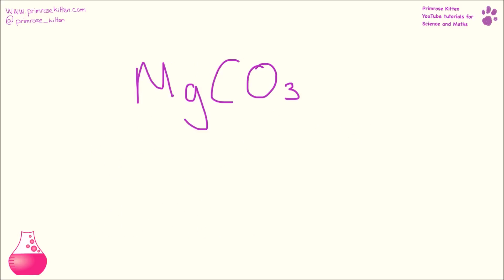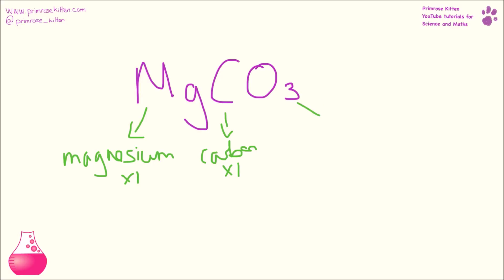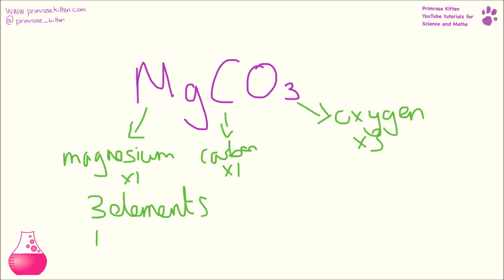And last one for you today: we have magnesium. Because there's no number after it, it means there's only one carbon. Again, no number after it, so it means there's only one. And oxygen — there are three of those because there's a number after it. There are three elements: one plus one plus three equals five atoms.